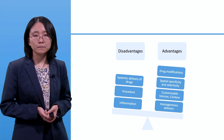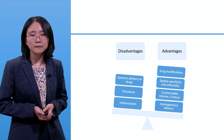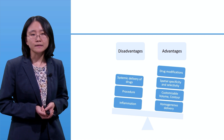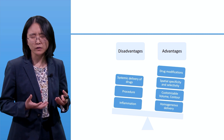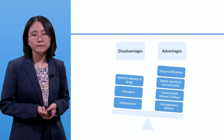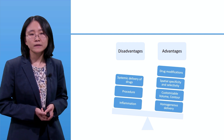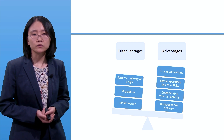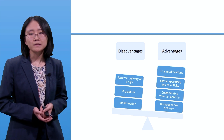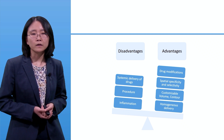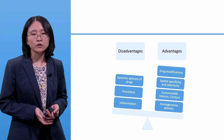As demonstrated by previous studies in non-human primates, the delivery of drug — using gadolinium as a surrogate marker — is quite homogeneous. Some disadvantages include the fact that we do have to administer the drug systemically, which may not be suitable for certain compounds where the drug might be very quickly washed out.